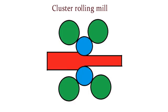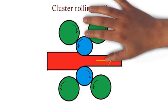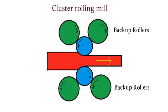Next is cluster rolling mill. In this type of rolling mill, two or in some cases three backup rollers are used to reduce the thickness of hard material. Following point is very important about rolling mill.